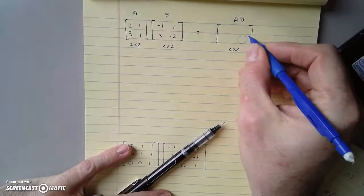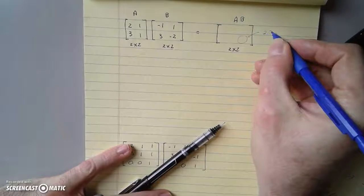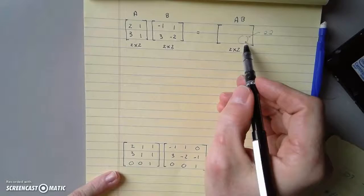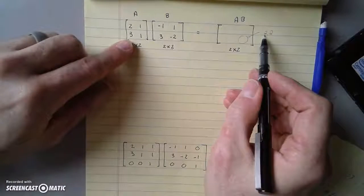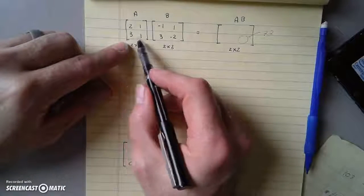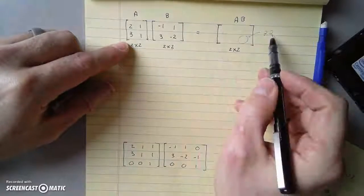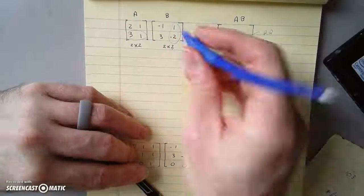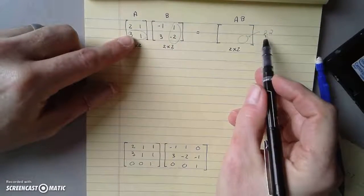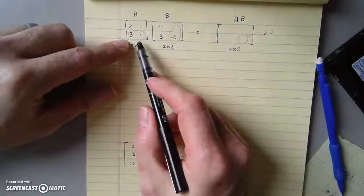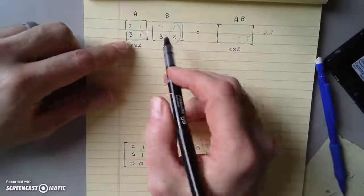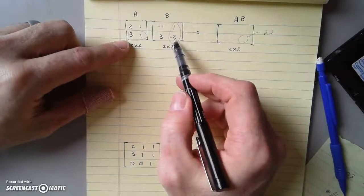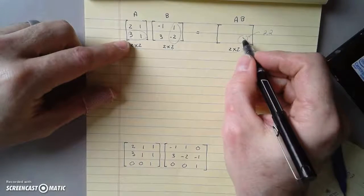Suppose I wanted to do this one first. This is the 2,2 spot. I would never do this, but if I wanted the 2,2 spot, that means I want the second row of the first matrix and the second column of the second matrix. So that would be 3 times 1 plus 1 times negative 2. So that's 3 minus 2, that's 1.